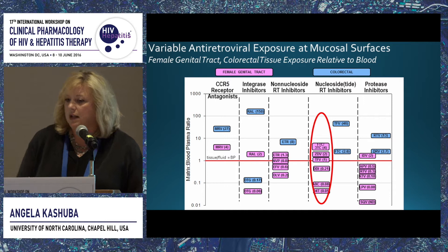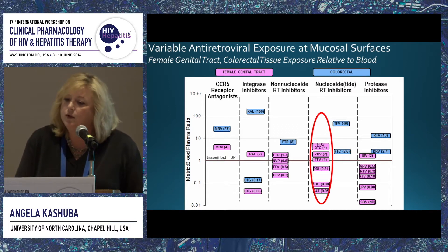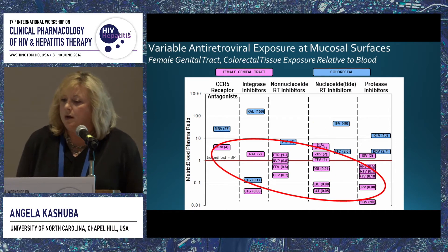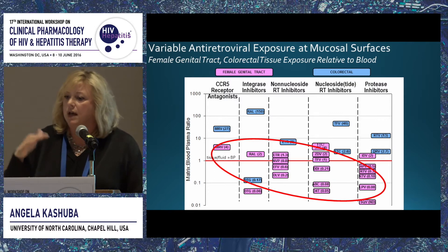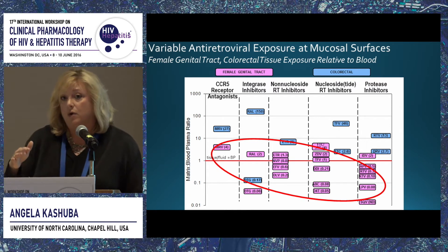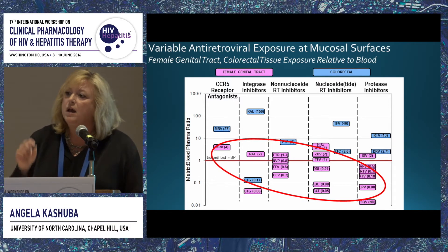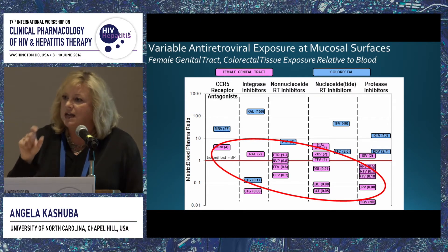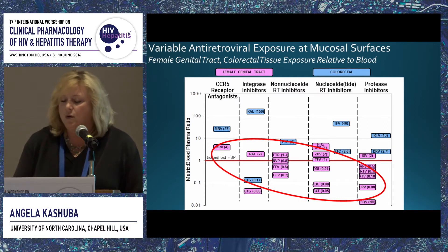Just within a drug class, we see highly variable penetration. In pink are female genital tract concentrations; in blue are colorectal tissue concentrations. In general, drug penetration into the female genital tract is lower than what we see in colorectal tissue. This is not a result of fecal contamination because we wipe the gut clean before sampling. We also see with IV drugs in animals that drug tends to concentrate in colorectal tissue very quickly — so there's also a biological effect without even having the oral formulation dosed.